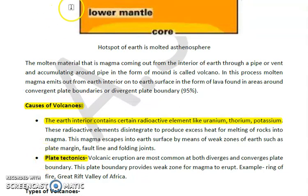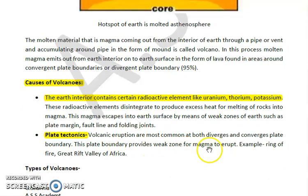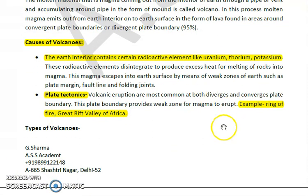The second cause is plate tectonics. Due to the tectonic activity of Earth's plates, volcanic eruptions are very common at both divergent and convergent plate boundaries, which are weaker zones where magma can find space to erupt as lava. A very important example is the Ring of Fire in the Pacific Ocean, where maximum volcanic and earthquake activity occurs — this is frequently asked. Another example is the Great Rift Valley of Africa.